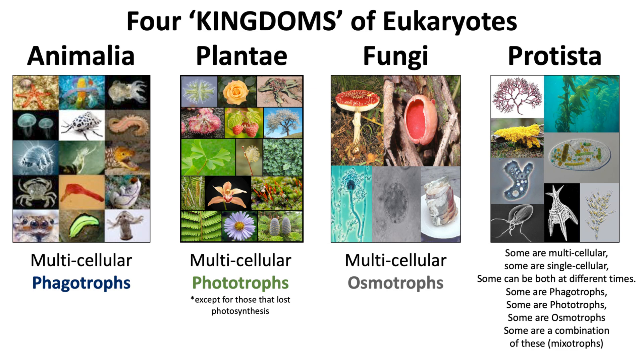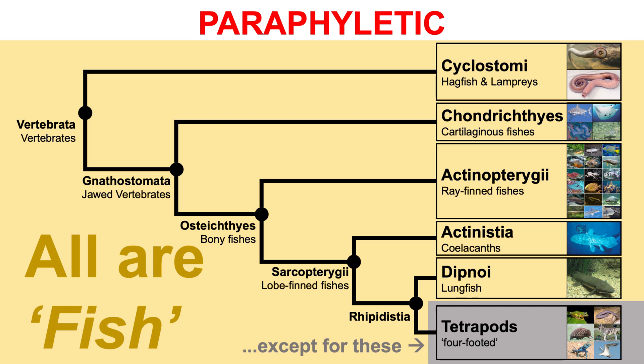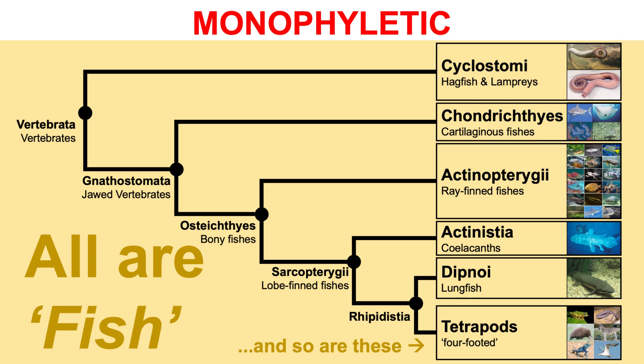However, none of the clades we're going to meet satisfy all three characteristics that typify animals. In The Lungfish's Tale we discussed the meaning of the word fish. In everyday life we use that word to refer to all vertebrates except for the land-living tetrapods — amphibians, reptiles, birds, and mammals. But that's what we call a paraphyletic grouping, wherein a subset is excluded from the whole taxon. If we were to define fish to be monophyletic, as a clade, then all tetrapods would be fish too.